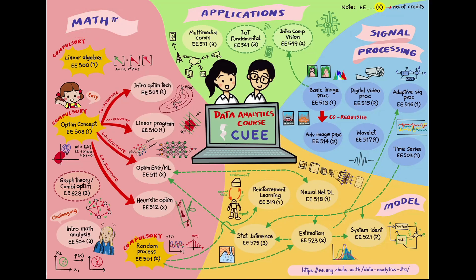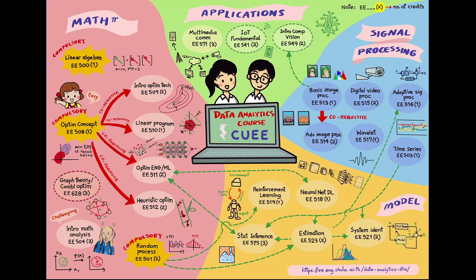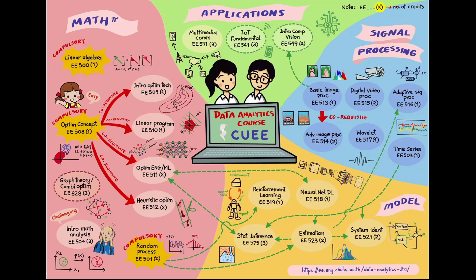The very first group of courses is the mathematics group. As you all know, linear algebra, optimization, and probability and statistics are the key elements for understanding the concept of models. The first course is advanced linear algebra, which involves linear vector space, nonlinear inner product space, matrix analysis, matrix decomposition, and solving linear and nonlinear equations.